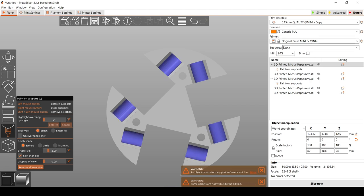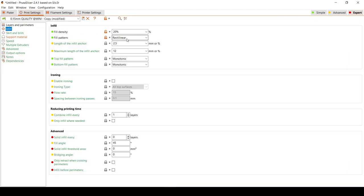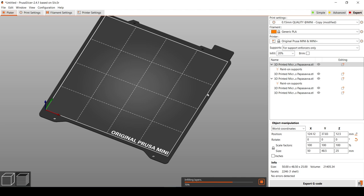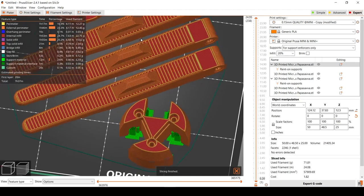After which I made sure to select the support option for support on forces only, and set the infill to rectilinear and at 20%. I then sliced and generated the gcode to print with.